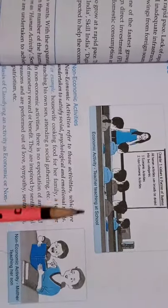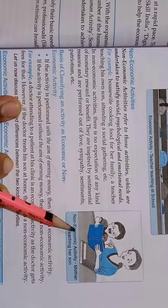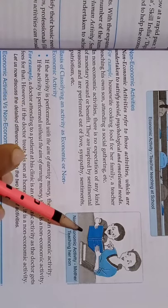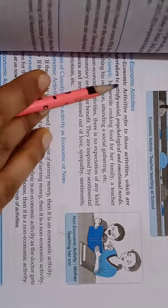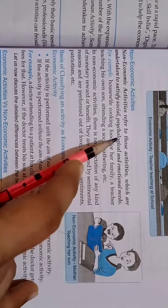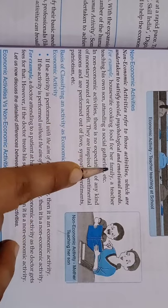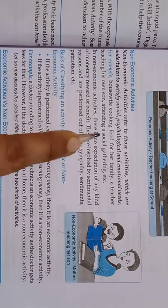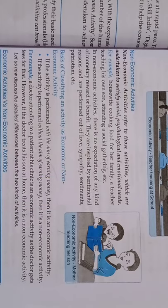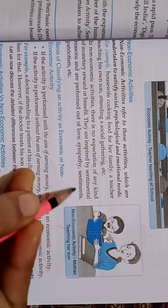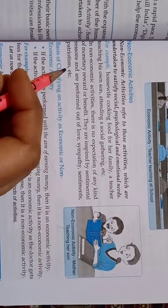For example, a teacher teaching at a school is an economic activity. But if the same teacher is teaching his own son, it will not be an economic activity because he is not teaching his son to earn money. Non-economic activities refer to those activities which are undertaken to satisfy social, psychological and emotional needs — for example, a housewife cooking food for her family, a teacher teaching his own son, or attending a social gathering. In non-economic activities there is no expectation of any monetary reward; they are inspired by sentimental reasons and are performed out of love, sympathy, sentiments and patriotism.